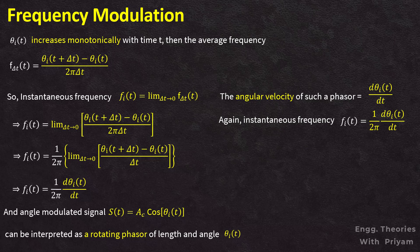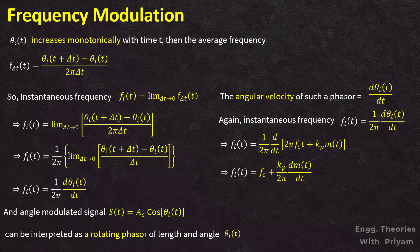Therefore, the instantaneous frequency fi(t) = (1/2π) · d/dt·θi(t). By substituting θi(t) from the phase modulated signal and differentiating 2πfc·t + kp·m(t) with respect to t, we get fi(t) = (1/2π) · [2πfc + kp · d/dt·m(t)], which simplifies to fi(t) = fc + (kp / 2π) · d/dt·m(t).